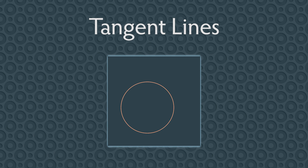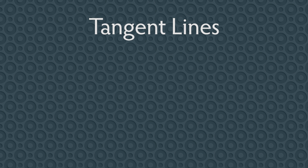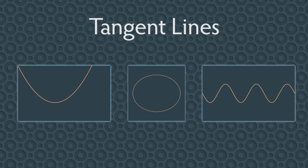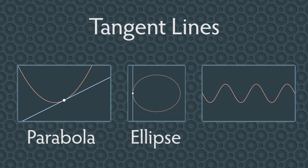Tangent lines have been studied for more than 2,000 years. Originally, a tangent line was defined to be a line that touched a circle at just one point. But over the centuries, this definition has been expanded to include lines touching other curves, and not just circles. You can have a tangent line to a parabola, an ellipse, or more elaborate curves like the sine curve.